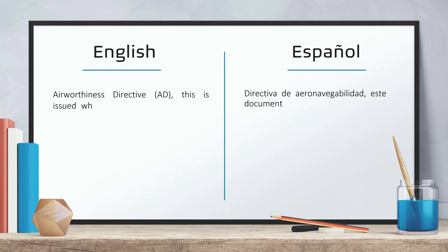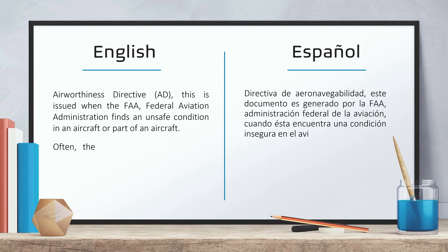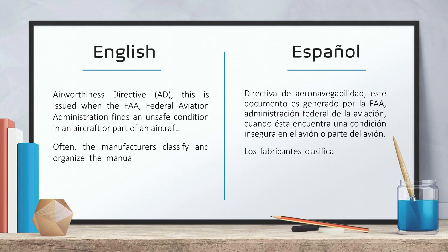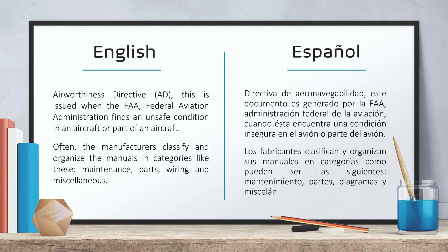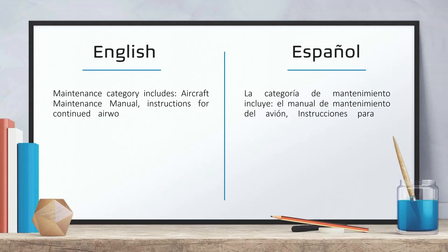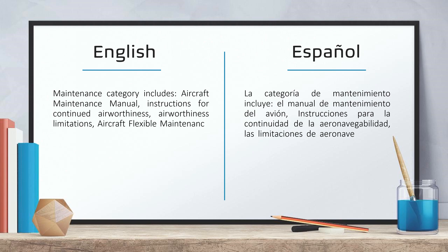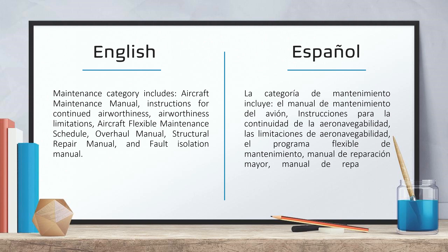Airworthiness directive — this is issued when the FAA, Federal Aviation Administration, finds an unsafe condition in an aircraft or part of an aircraft. Often, manufacturers classify and organize the manuals in categories like this: maintenance, parts, wiring and miscellaneous. The maintenance category includes aircraft maintenance manual, instructions for continued airworthiness, airworthiness limitations, aircraft flexible maintenance schedule, overhaul manual, structural repair manual and fault isolation manual.